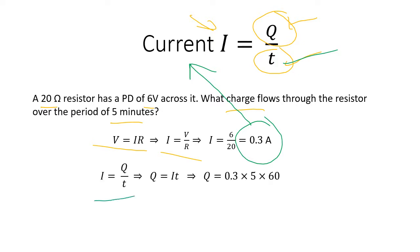Now rearranging Q = It gives Q = It. Substituting I = 0.3 A and t = 5 minutes — converting to seconds: 5 × 60 = 300 s — gives Q = 0.3 × 300 = 90. Don't forget the unit: the unit of charge is C (coulombs), so the answer is 90 C.